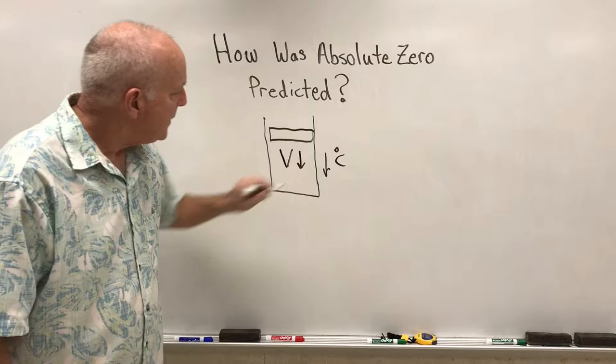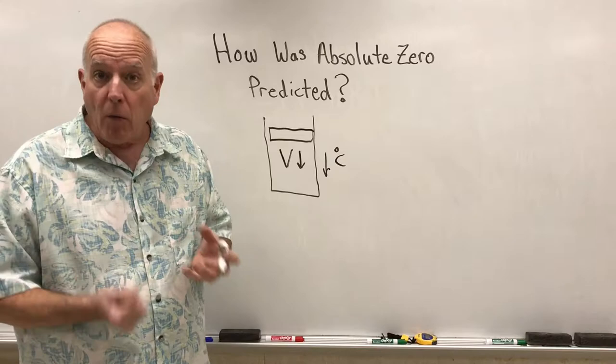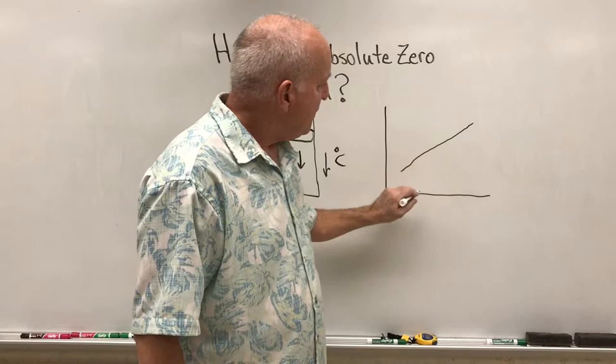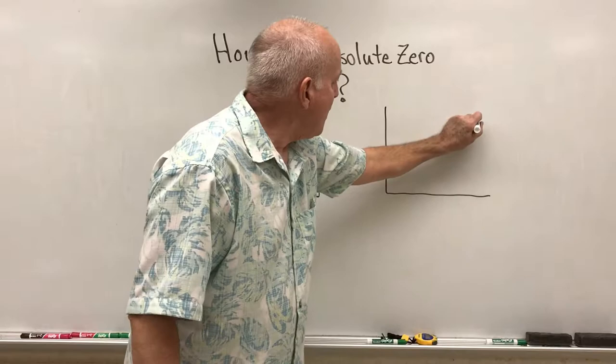He didn't have the capability of cooling gases down a whole lot, but he was capable of getting to the point where he saw this pattern. He said, look what's going on: as I cool this gas down the volume goes down. What's going to happen when I get to a zero volume? What would the temperature predicted be?